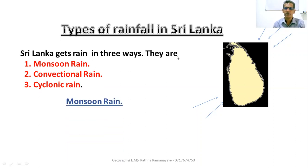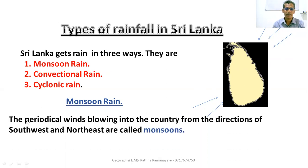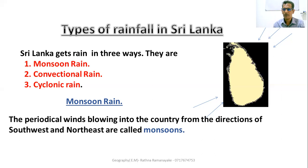Monsoons. Sri Lanka gets rain by means of two monsoons: north-east monsoon and south-west monsoon. The periodical winds blowing into the country from the direction of south-west and north-east are called monsoons.